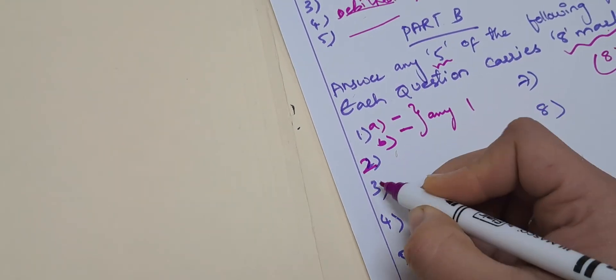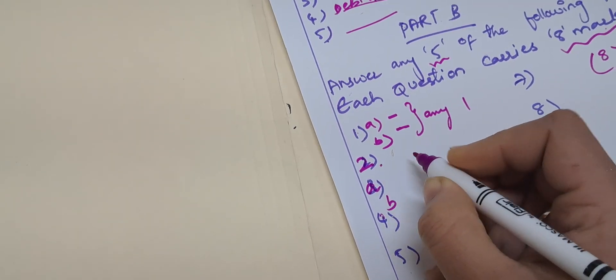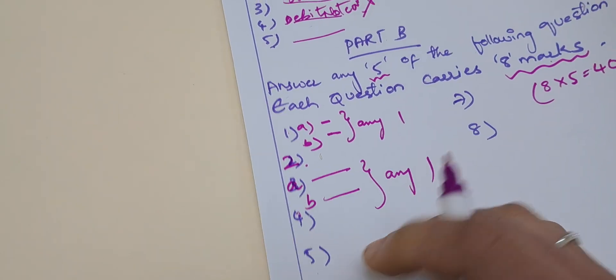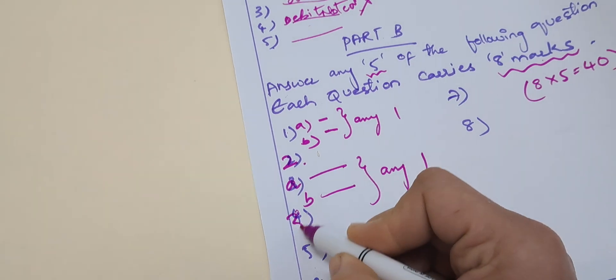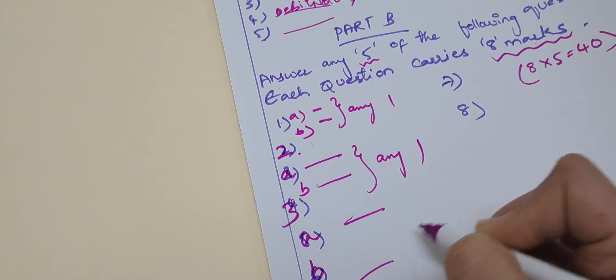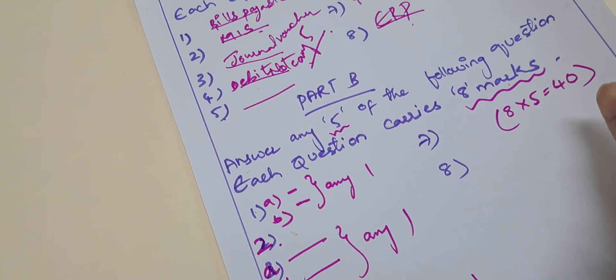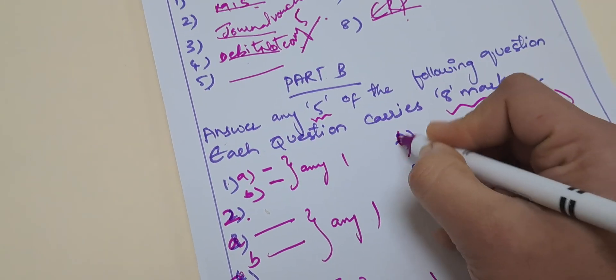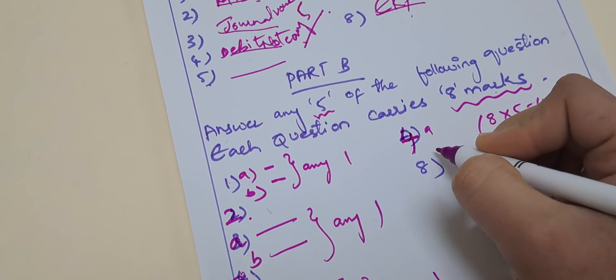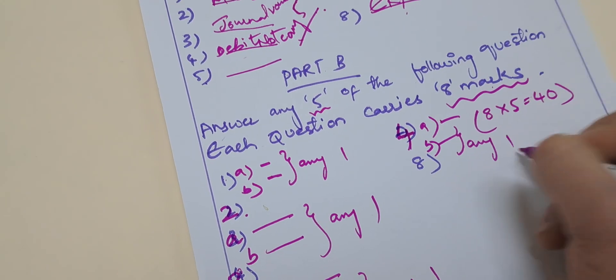For the first question, answer either A or B — any one. Similarly for the second question, option A and B are given, choose any one. For the third question, there is also A and B with internal choice — attend any one. The same internal choice pattern of A and B applies for the fourth and fifth questions as well.